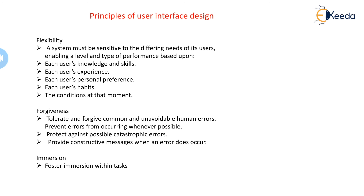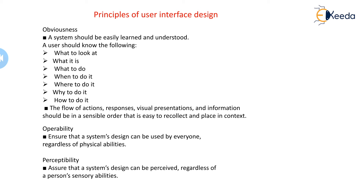Then there is obviousness. All objects and controls should be visible and intuitive, and their function should be identifiable. The design of a control should suggest how it is operated. A system should be understandable, flowing, and presented in an obvious and meaningful order. Strong cues to the operation of objects should be presented.